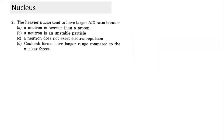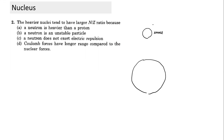Why do heavy nuclei tend to have a larger N/Z ratio? In a small nucleus, all nucleons are within 1 to 2 Fermi of each other. Both electrostatic and nuclear forces act, and they are in a state of balance. But as the nucleus grows larger, if one force increases in greater proportion than the other, a problem arises.